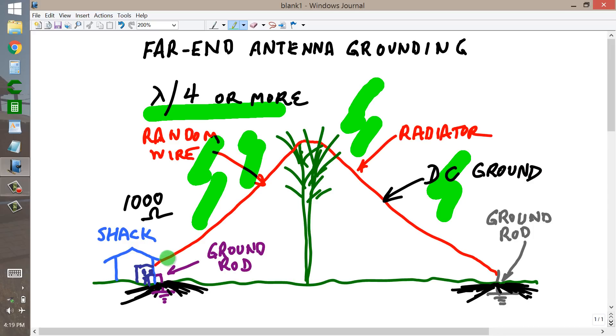You are, of course, as with any end fed antenna, running the risk of RF in the shack when you have an unbalanced antenna like this running right down to your shack. But, that would happen whether the far end is grounded or not.